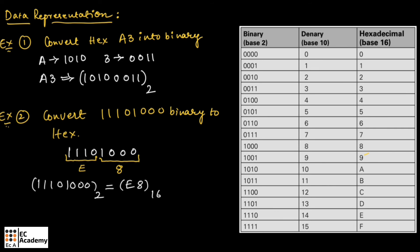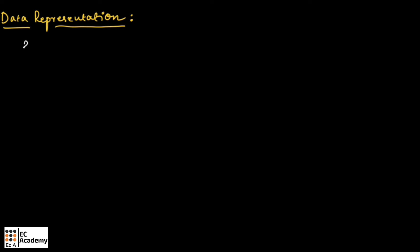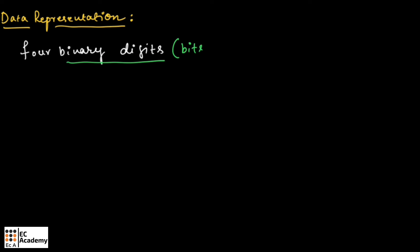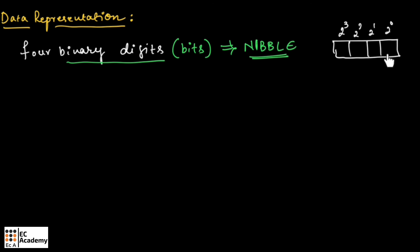This is how we can do the conversion. Here you need to remember that if we take 4 binary digits — a binary digit is also known as a bit, which is short for binary digit — we call that a nibble. So 4 bits is known as a nibble. For example, 1011 is a nibble.